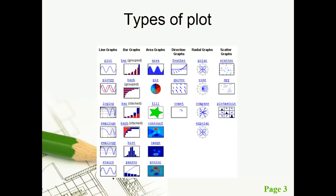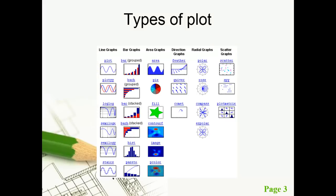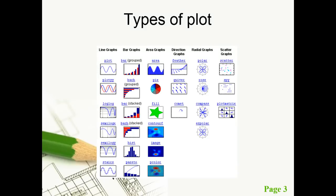First we will see the different types of plot. These are the types of plot categorized according to their function and uses. They are categorized into line graphs, bar graphs, area graphs, directional graphs, radial graphs, and scatter graphs. These are 2D graphs. There are also 3D graphs.